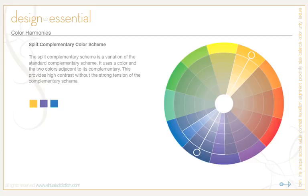The split complementary color scheme is a variation on the standard complementary scheme. It uses a color and then the two colors adjacent to its complement. For example, using orange, you'd use the two adjacent colors to its complement blue — a brighter blue and a purple. Pros include more nuances than the complementary scheme while still retaining strong visual contrast. Cons are that it's harder to balance than monochromatic or analogous schemes. Try using a single warm color against a range of cool colors, and avoid desaturated warm colors like browns or dull yellows.